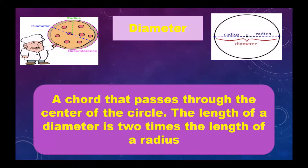The length of a diameter is two times the length of a radius. See, this is the diameter, and from the center, these two radii equal a diameter.